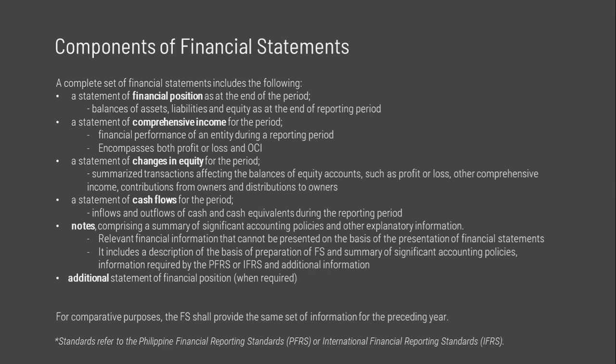Additional line items shall be presented whenever relevant to understanding the entity's financial performance. The nature and amount of material items of income or expense shall be disclosed separately. Circumstances giving rise to separate disclosure include: write-downs of inventories to net realizable value or of PPE to recoverable amount and reversals of such write-downs; restructuring of activities and reversals of any provisions for restructuring costs; disposal of items of PPE or investments; and discontinued operations.